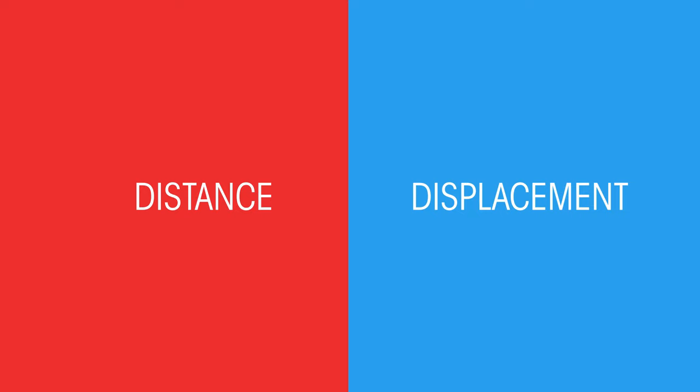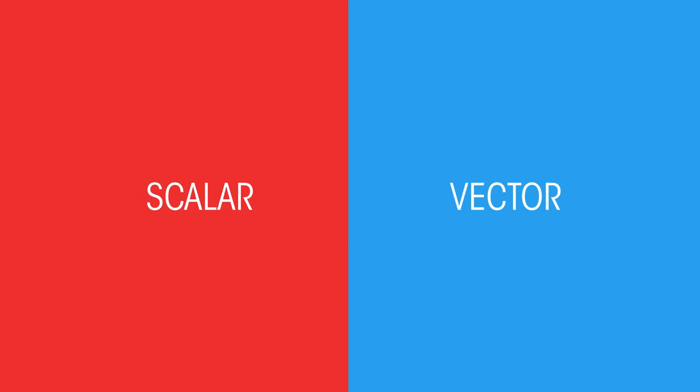But first we need to go through the difference between what is a scalar and what is a vector. Both a scalar and vector are types of measurement. However, a scalar only tells you the magnitude or size of the measurement, whereas a vector will tell you both the magnitude and direction.